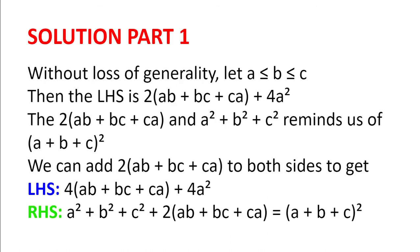Solution. Without loss of generality, let A be less than or equal to B be less than or equal to C. Then the left-hand side is 2 multiplied by AB plus BC plus CA plus 4A squared.